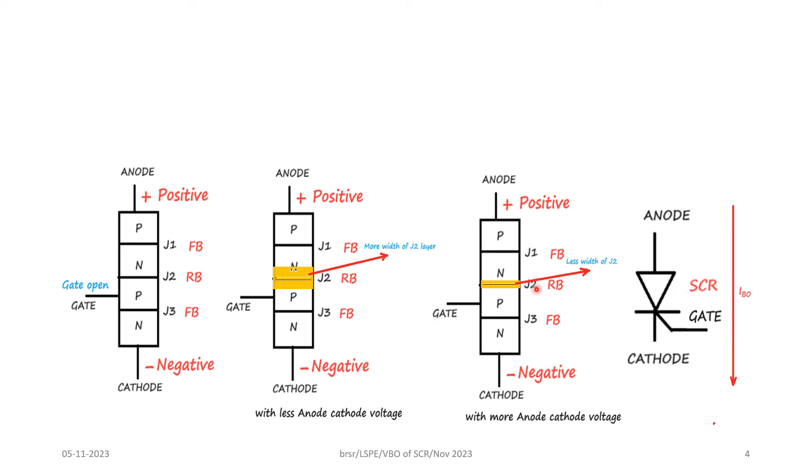At this time J2 junction has avalanche breakdown and there will be a large current flow from the anode to the cathode. The voltage at which the junction J2 breaks down and current flows through the device is called the forward breakover voltage.